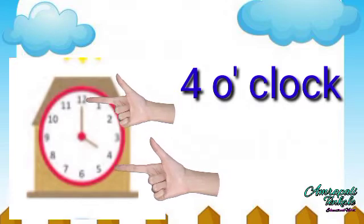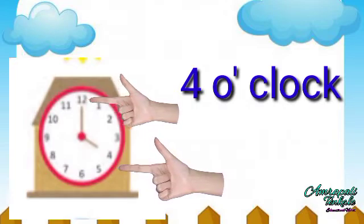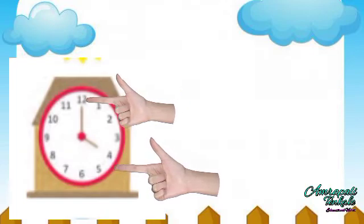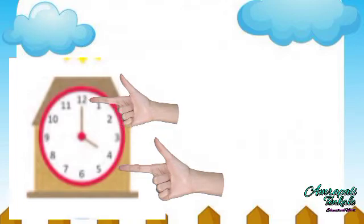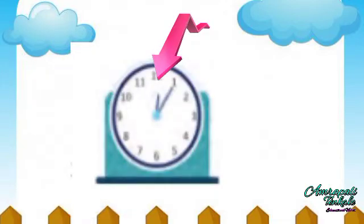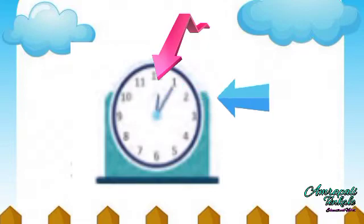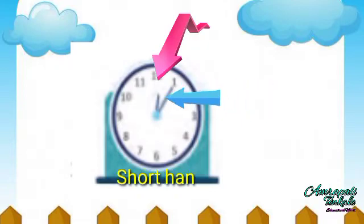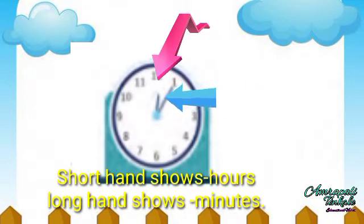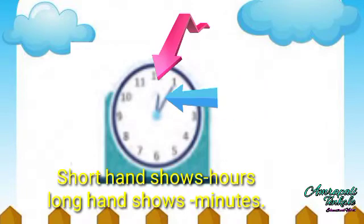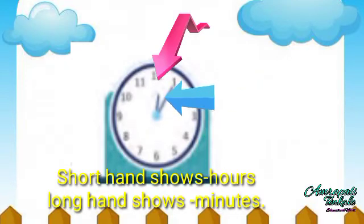We can also show 5 o'clock and 9 o'clock like this. The short hand goes slowly, but the long one moves faster. The short hand shows hours and the long one shows minutes. That is why they are also called the hour hand and the minute hand.